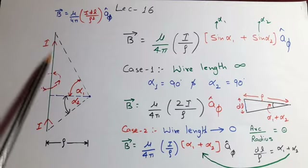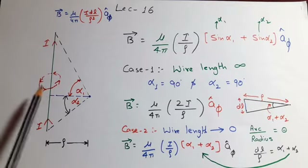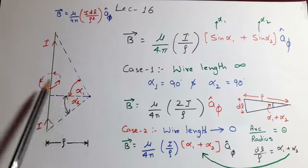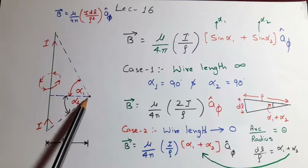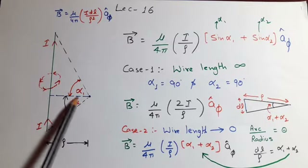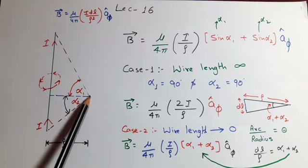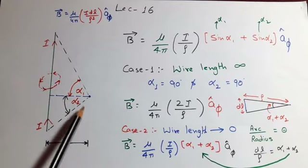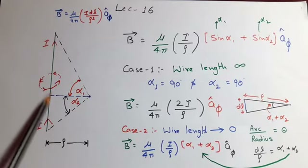Now we see what would be the expression for magnetic flux density due to a long current carrying wire. Suppose this is a wire carrying current I and we want to calculate magnetic flux density in the vicinity of this wire. The magnetic flux density will depend upon the perpendicular distance from the wire — suppose it is rho. Secondly, it also depends where the observation point is situated along the length of the wire, and this dependency is due to the finite length of the wire.